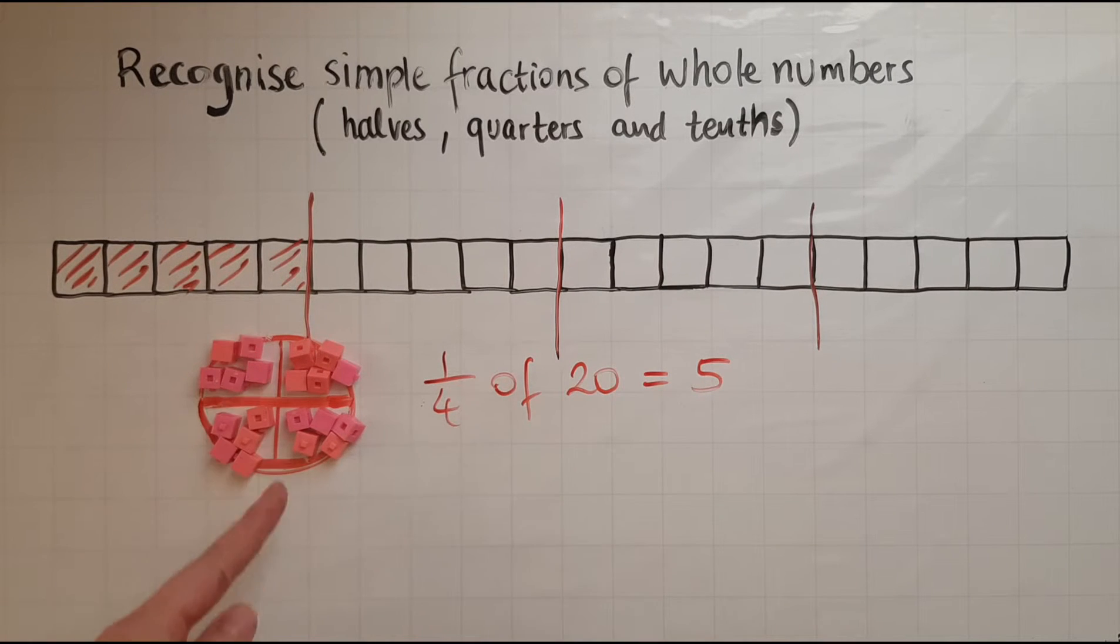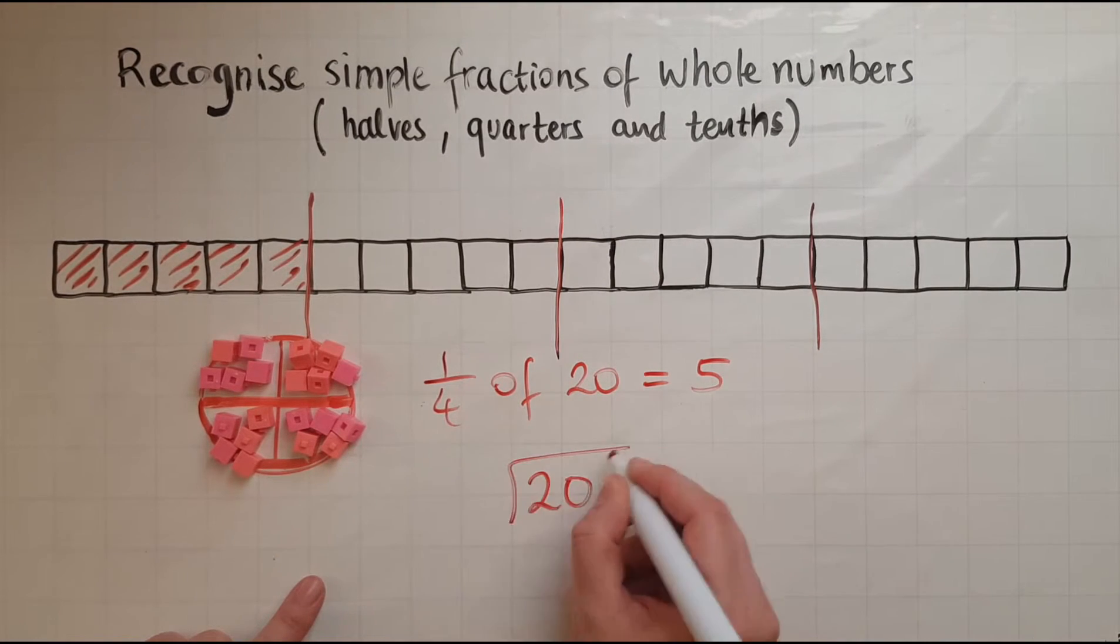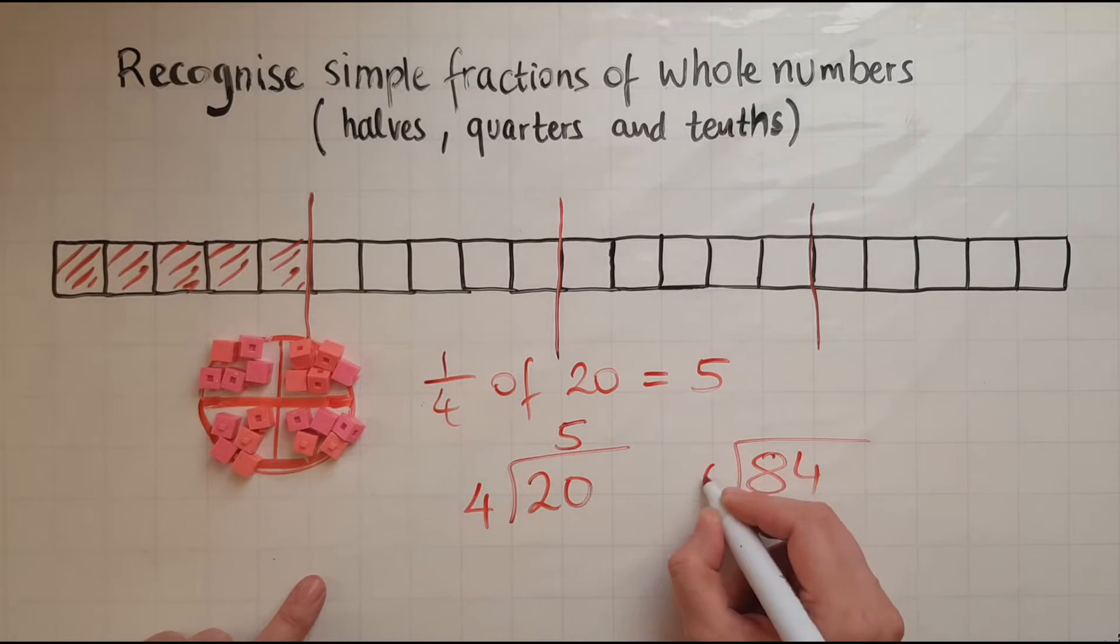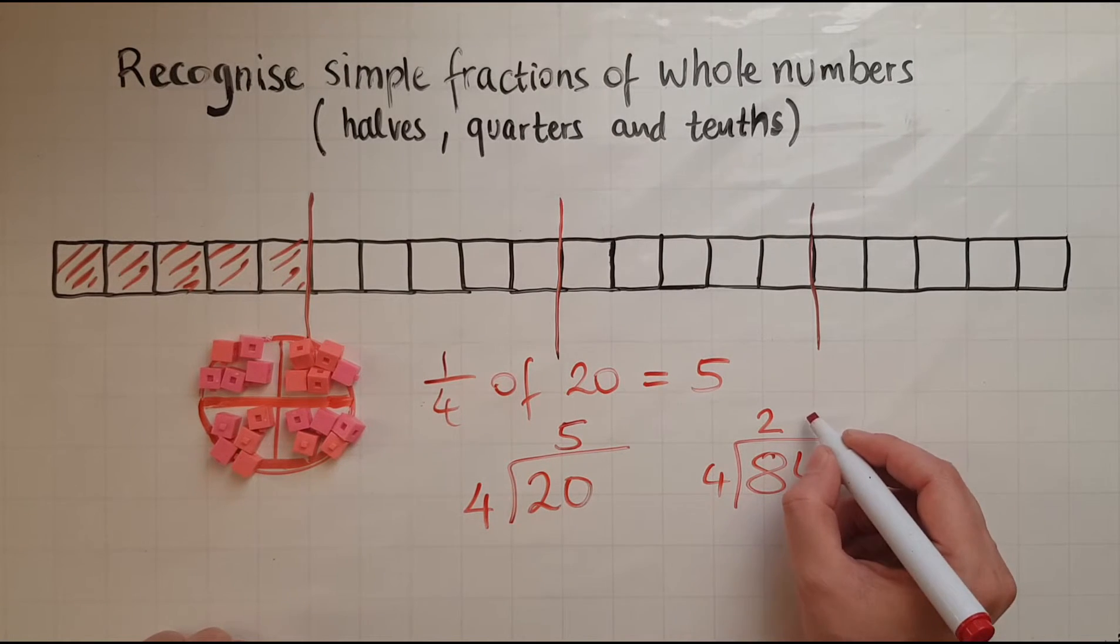But what would be the shortest way to do it? As you can see, in quarters, we cut shapes or numbers into 4 equal parts. So that means dividing it by 4. So 20 divided by 4 gives me 5. 84 divided by 4: 4 into 8 fits twice, 4 into 4 fits once.